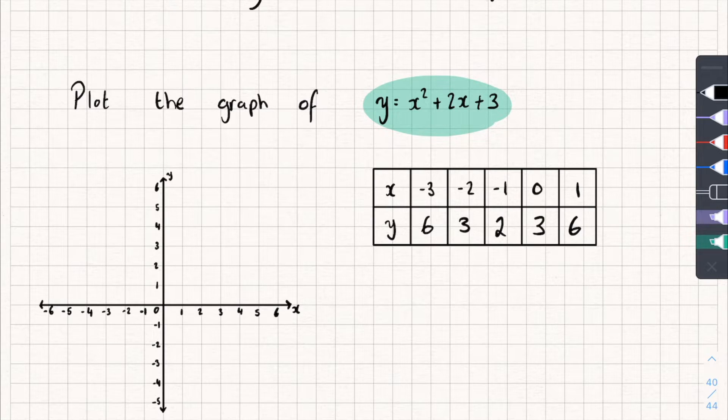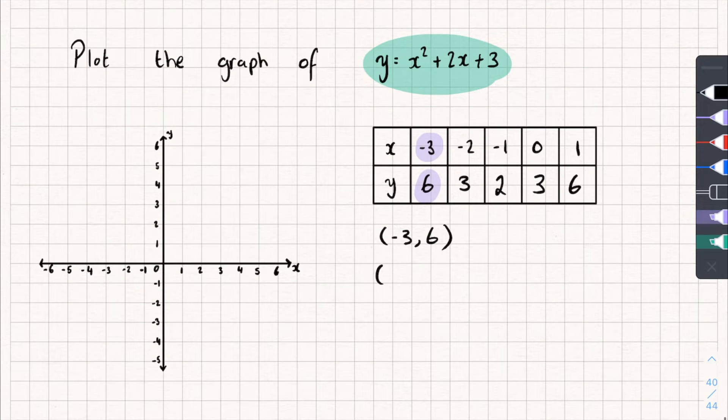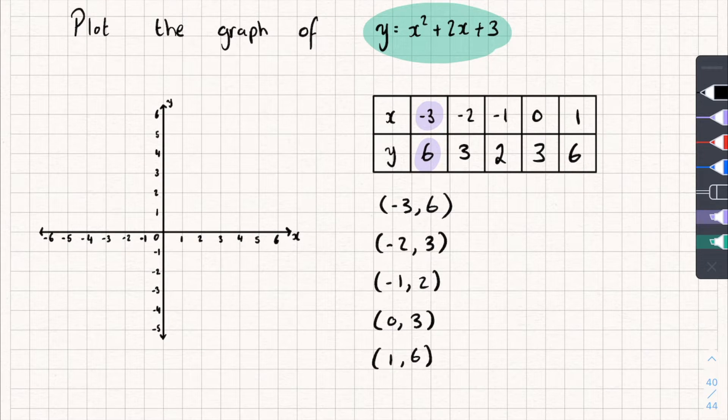But how do we plot it? Well we look back at our table and we see we've got x is negative 3, y is 6. Well that's a coordinate. So remember coordinates go x then y. So when we've got negative 3, 6, what we've actually got is negative 3 and 6 as a coordinate. Let's do the next one. We've got negative 2 and 3, negative 1 and 2, 0 and 3, and finally we've got 1 and 6. So you can see these are coordinates and all I'm going to do now is plot these coordinates onto my graph.